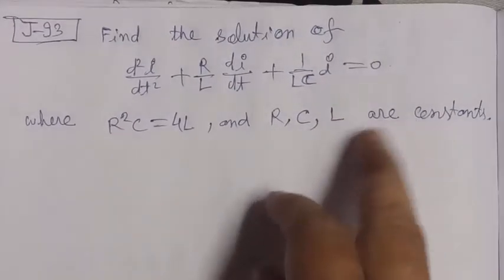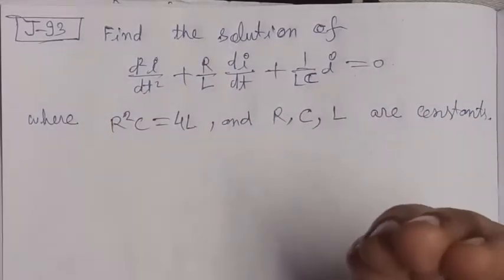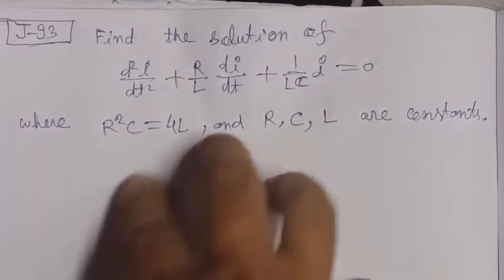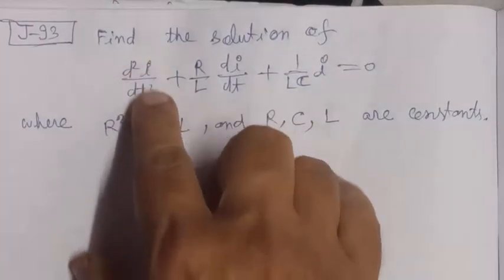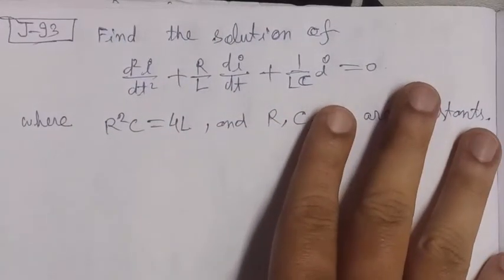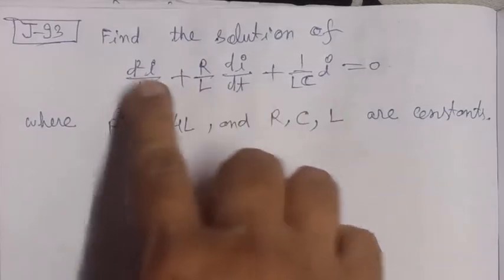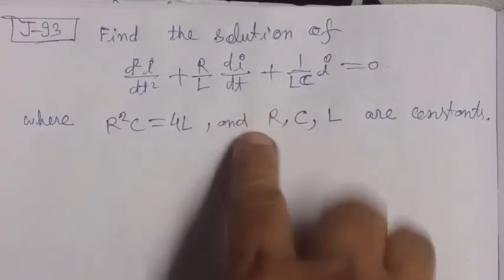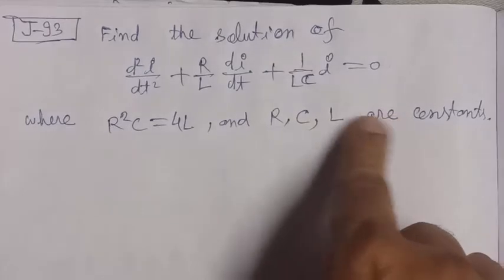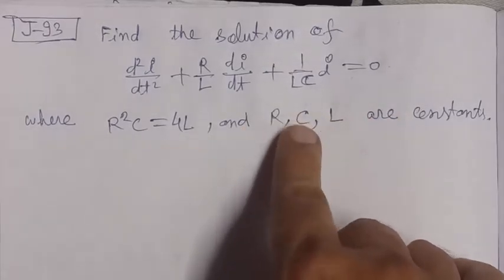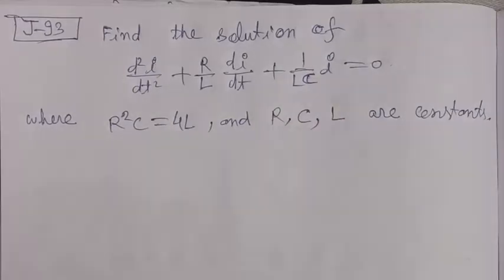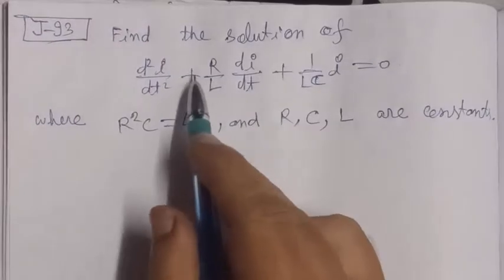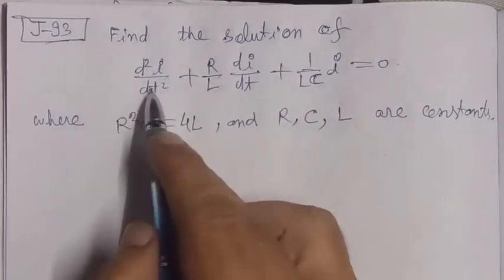यह problem engineering की है — electrical engineering या electronic engineering दोनों से related हो सकती है। इसमें जो i use हो रहा है वो current के लिए है। हमें differential equation को solve करना है। Independent variable t है और dependent variable i है। R, C, L constants हैं — R resistance है, C capacitance है, और L inductance है।